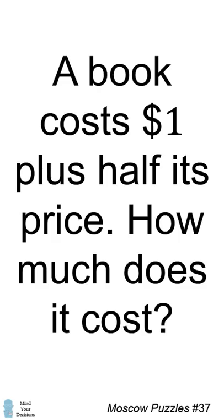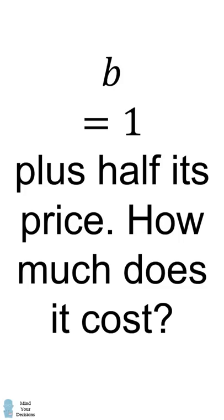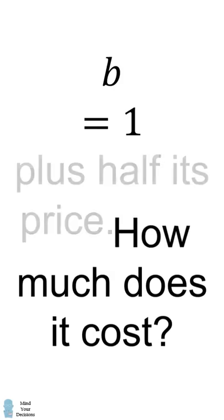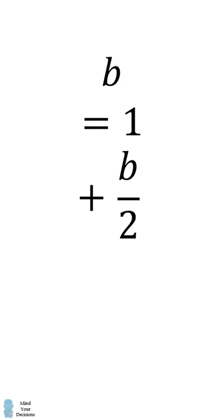To solve the problem, suppose the book costs b dollars. This is equal to 1 plus half its price, which is equal to b over 2. To figure out how much the book cost, we need to solve this equation.